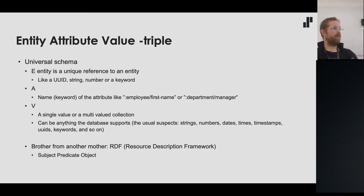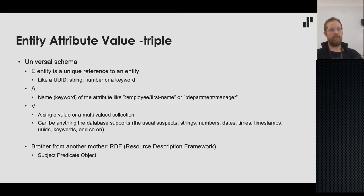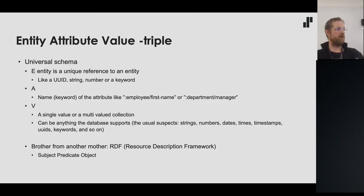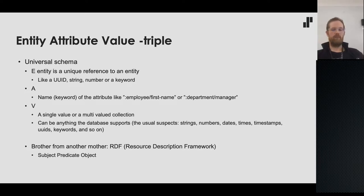For example, the attribute could be 'employee's first name' or 'manager of this department.' The V part is the value, which can be single-valued or a multi-valued collection — anything the database supports: strings, numbers, dates, timestamps, UUIDs, keywords, and so on. There's also a mirror world in the W3 standard called RDF — the Resource Description Framework — which is essentially the same but calls it subject, predicate, and object, with subjects identified by URIs.